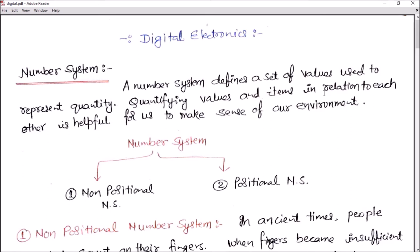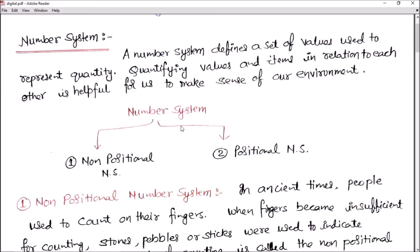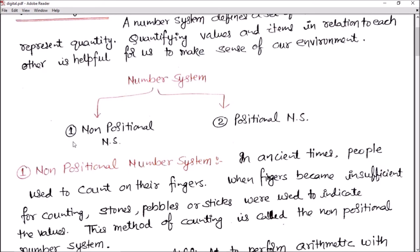Quantifying values and items in relation to each other is helpful for us to make sense of our environment. That means to represent any quantity, we need a number system, and we use it for quantifying. In general, number systems are divided into two categories.